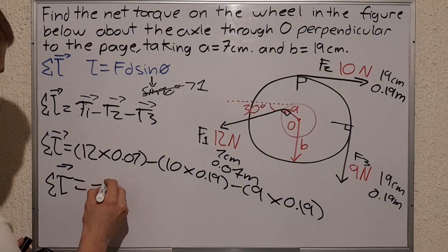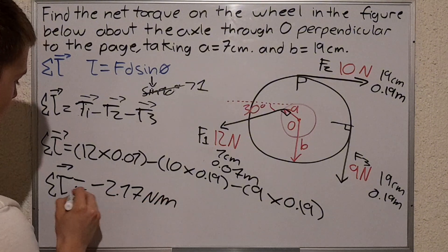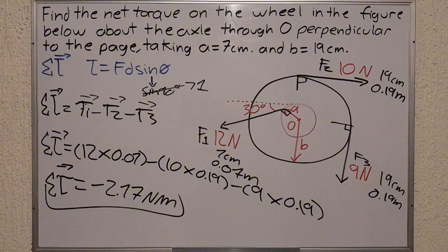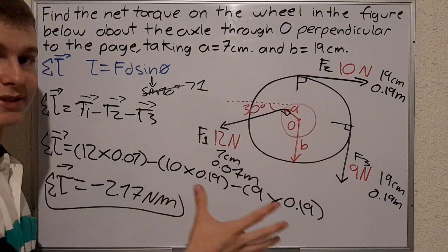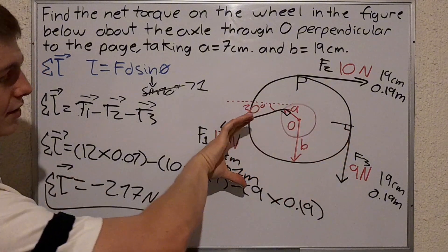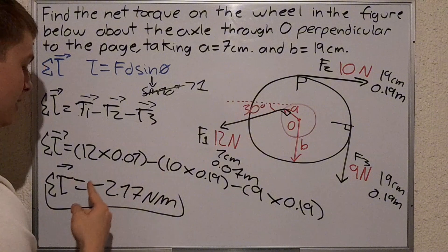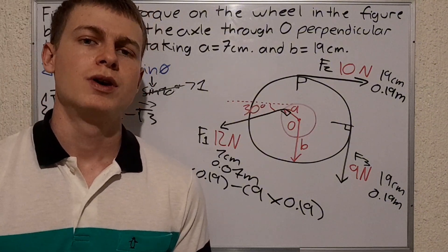Now the negative sign means that in the end, if we apply all these forces simultaneously, we're gonna get a rotation that goes this way, that goes clockwise. This negative sign indicates that.